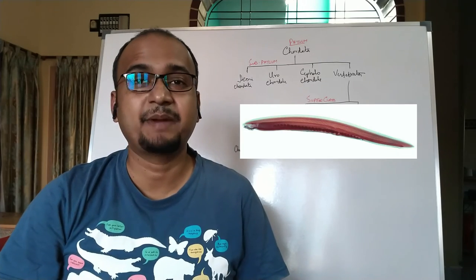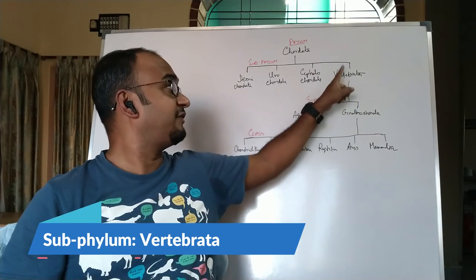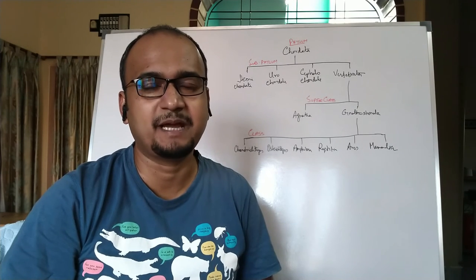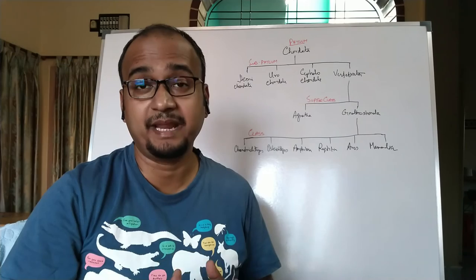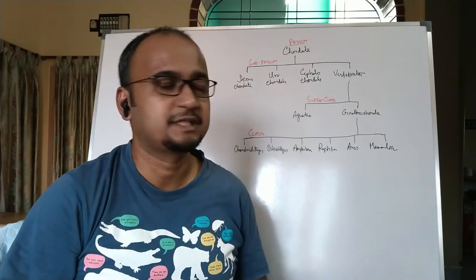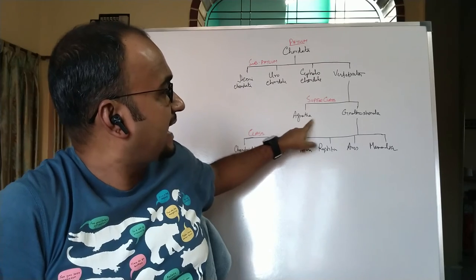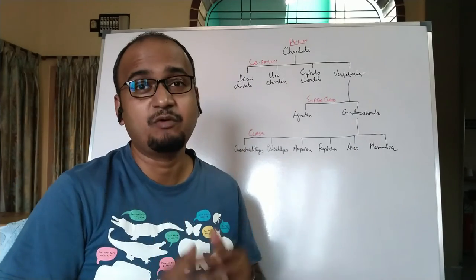Next, last sub phylum, Vertebrata. In case of vertebrates, notochord is replaced by vertebral column and their brain is covered by cranium. Sub phylum Vertebrata is divided into superclass Agnatha and Gnathostomata. Vertebrates without functional jaw come under Agnatha or Anatha, and vertebrates with jaws are called Gnathostomes.